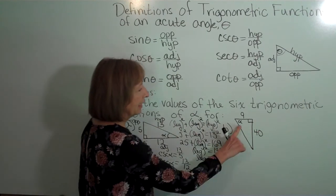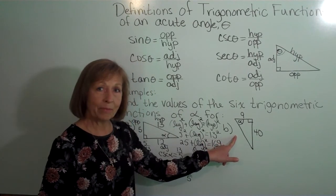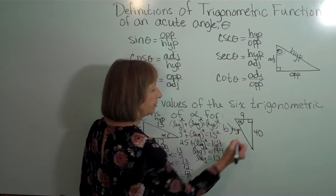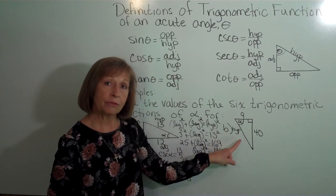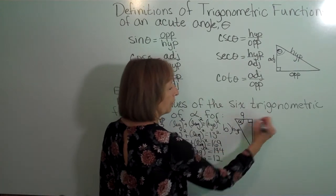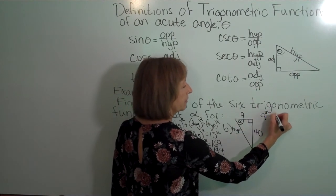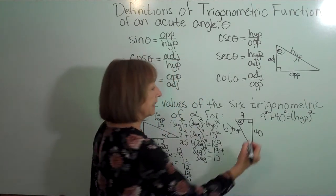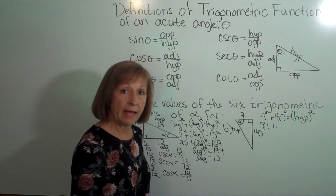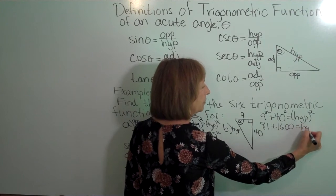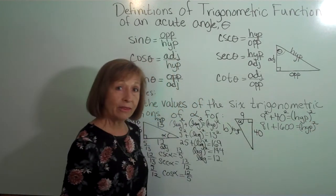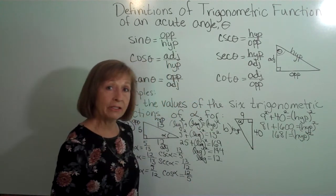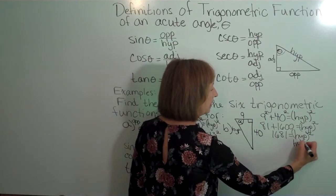Let's do the next example. Here I have angle alpha, and the right angle is marked, so the side opposite the right angle is the hypotenuse. I have the two leg measurements and need to find the hypotenuse. So leg squared plus leg squared equals hypotenuse squared, giving me 9 squared plus 40 squared equals the hypotenuse squared. 9 squared is 81 and 40 squared is 1,600, giving 1,681 equals the hypotenuse squared. Taking the square root of both sides, the hypotenuse equals 41.